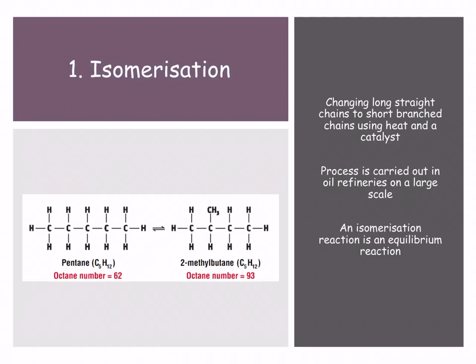This is isomerisation at its best. So this is an equilibrium reaction. We'll talk a lot about equilibrium reactions in sixth year but an equilibrium reaction is one that can go both forwards and backwards. So what we would use is heat and a catalyst to break up those long chained hydrocarbons into our branched hydrocarbons. It's basically very large scale production in oil refineries.